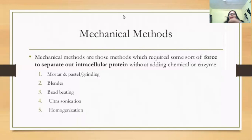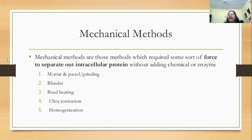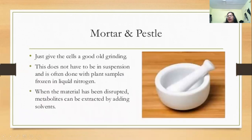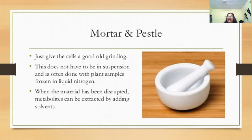Mechanical methods are those which require some sort of physical force to separate out intracellular protein without adding any chemical or enzyme. Examples include mortar and pestle, blender, bead beating, ultrasonication, and homogenization. The mortar and pestle is very common — present in every lab from 11th standard to research labs — and it simply gives the cells a good grinding.